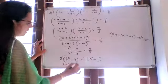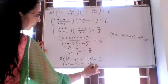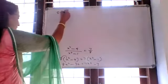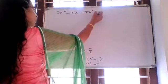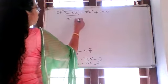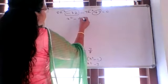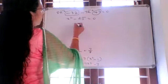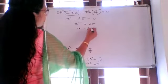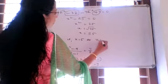Expanding: 8x squared minus 32 equals 7x squared minus 7. Moving all terms to the left: 8x squared minus 7x squared minus 32 plus 7 equals 0, giving x squared minus 25 equals 0. So x squared equals 25, x equals plus or minus 5. Therefore x equals 5 or x equals negative 5.